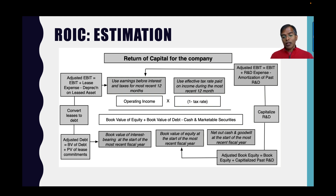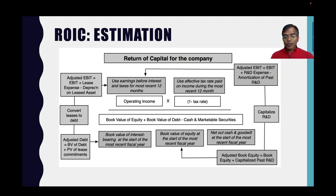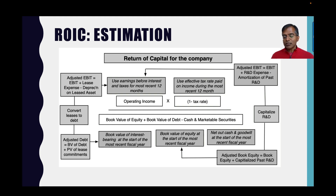For invested capital, I start with the book value of equity and book value of debt at the start of the most recent fiscal year from the accounting balance sheet. If leases are not treated as debt, I bring them onto the debt. If R&D is not capitalized — which it isn't for most firms — I capitalize R&D and bring it into book equity. I net out cash and marketable securities from the start of the most recent fiscal year. So my return on invested capital is a one-year number from the most recent 12 months — it comes with limitations because one-year numbers can jump around.